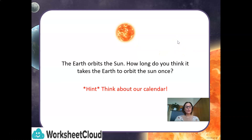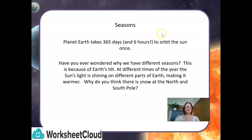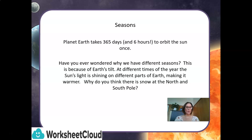The Earth orbits the Sun. How long do you think it takes the Earth to orbit the Sun once? Think about our calendar — we have seasons. Planet Earth takes 365 days and 6 hours to orbit the Sun once.